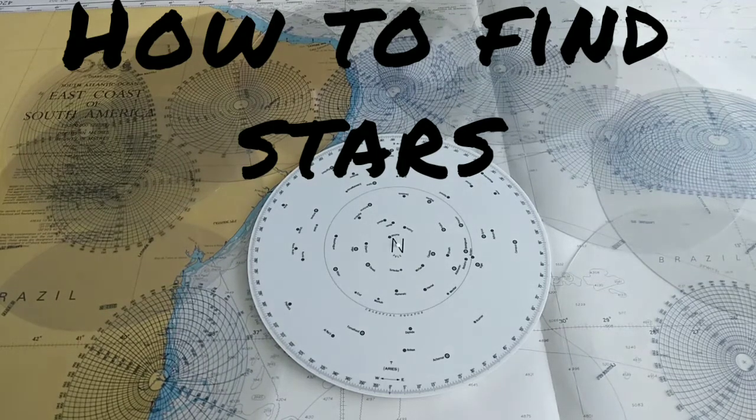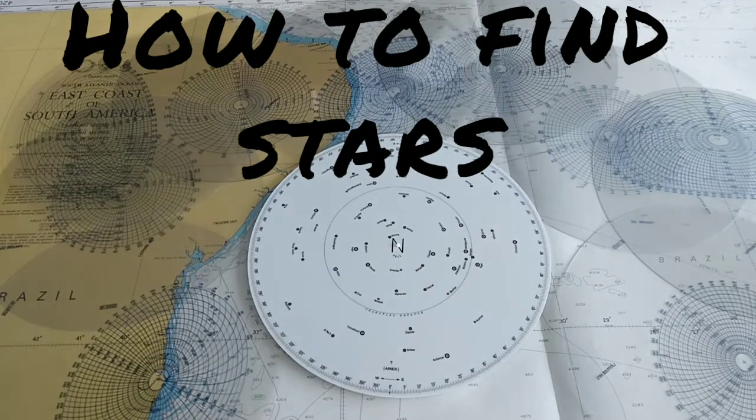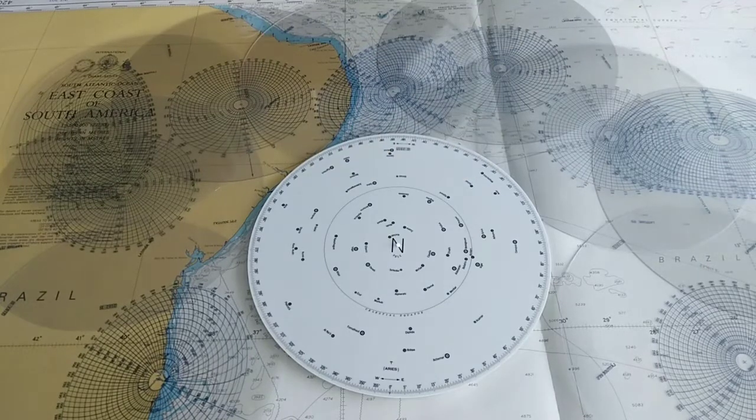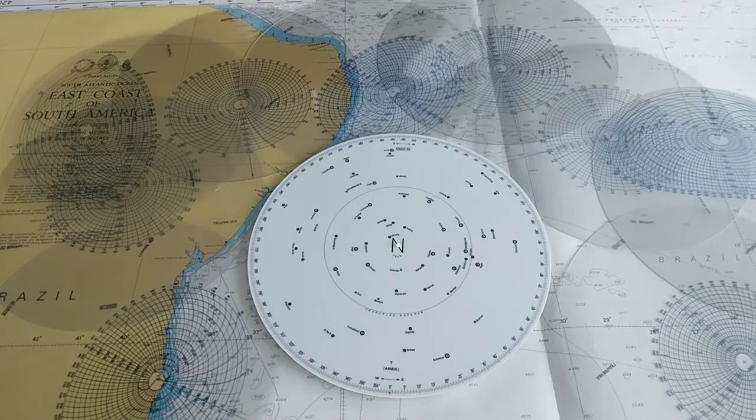Hello everybody, my name is Jali 4S7 Juliet Lima. Today I'd like to show you how to find a star using a star finder onboard a ship. This is a very useful tool to find a star just by using the latitude and the azimuth, and you can determine the stars. We use 57 stars for calculation.